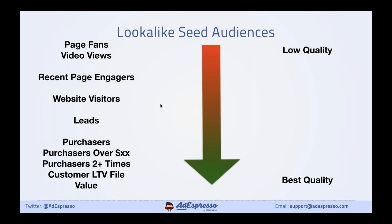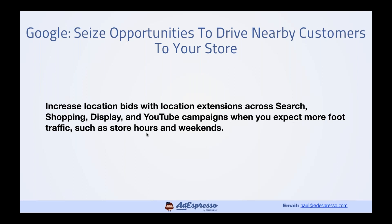Lookalike seed audiences go from lower to higher quality: page fans, video views, recent page engagers, website visitors, leads, and then purchases — which you can further segment by spend threshold, purchase frequency, or by uploading a customer lifetime value file from Shopify or your CRM. On Google, you can use local extensions across search, shopping, display, and YouTube, and tweak your bids to maximize showing ads to people close to your stores — especially when stores are open and on weekends.